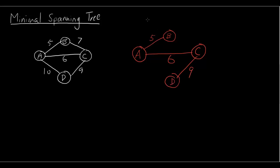So this is the minimal spanning tree of this network. You can see that we got rid of this arc here 7 and we also got rid of this arc here 10.